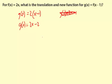Okay, so the translation is right 1. And our function is g of x equals 2 times parentheses x minus 1.